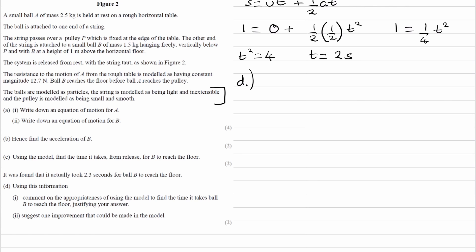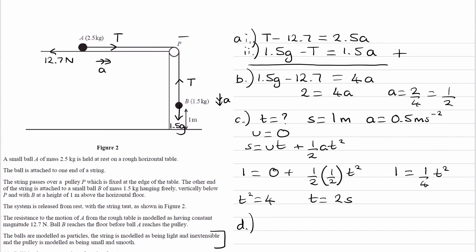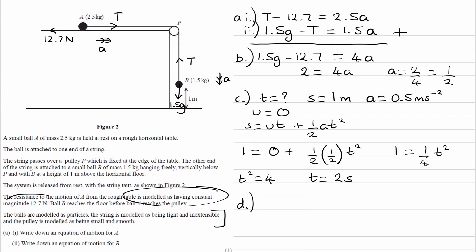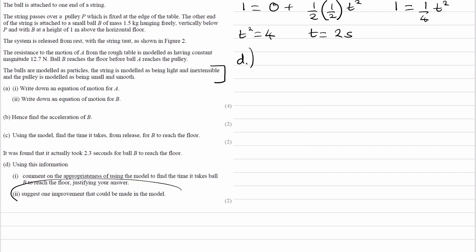So what we could say for part one, we could say our model is not appropriate because the time actually taken is longer than the time that we predicted. And then we can give a reason as to why this could be. So we could say, because in reality, the pulley has some friction. Or in reality, there would be air resistance, which we haven't taken into consideration. Or the friction that we have here, the 12.7, is not a constant value. That's something that we also assumed. It says over here that the friction is a constant value of 12.7 newtons. That could change. And if that changes, then that will change the overall acceleration and therefore time it takes for B to hit the floor. And then for the second part, the improvement, well, we just say to include those things. So model the air resistance, consider friction in the pulley, etc.